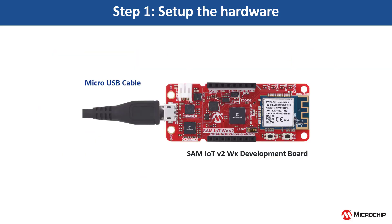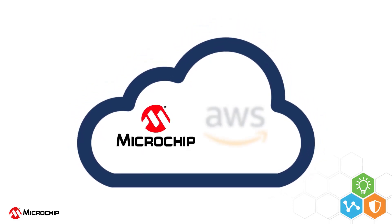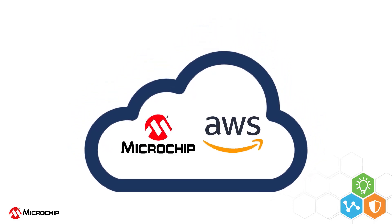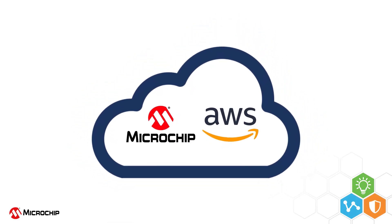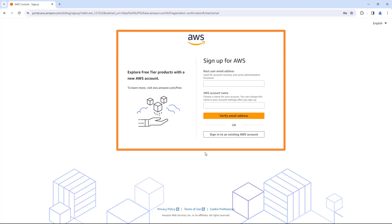Let us set up the hardware as shown to test functionality. Connect a micro USB cable from the PC to the debug USB port of the development board to power the board for programming. Before diving into the application, you will need an AWS account. Head to the AWS website and follow the instructions to create your account.